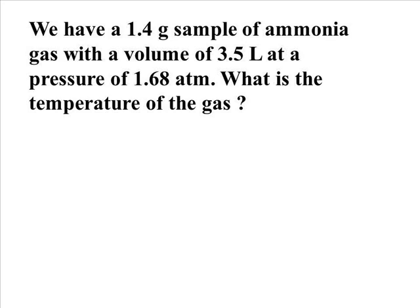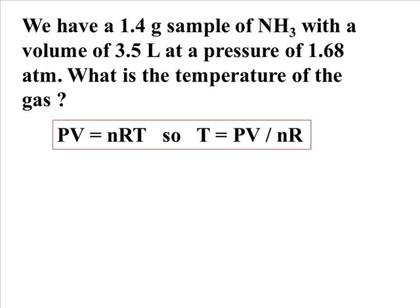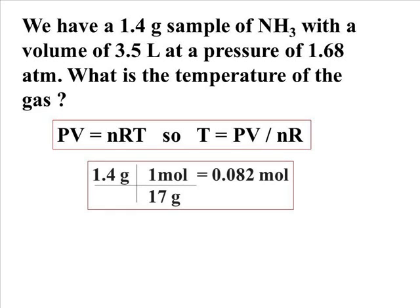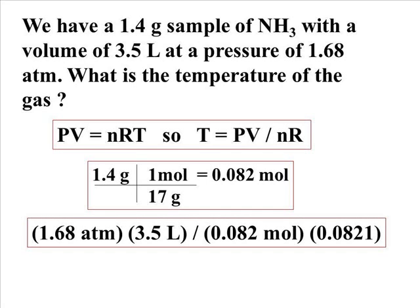We have 1.4 grams of ammonia gas with a volume of 3.5 liters at a pressure of 1.68 atmospheres. Now we are going to solve for the temperature of this gas. Temperature is PV over nR. We still need to turn our grams of ammonia into moles, using the molar mass of ammonia. Placing our variables, T is equal to PV over nR. This time we are going to use the 0.0821 liter atmosphere mole Kelvin, because again our pressure unit is in atmospheres. Plugging our numbers in, we come up with a temperature of 873.4 Kelvin. Our temperature will automatically come out in Kelvin, because that is the unit of temperature that is in our R value.